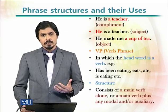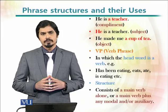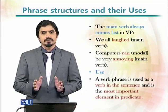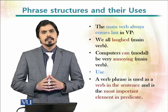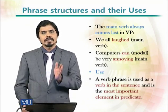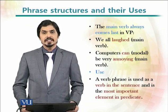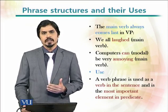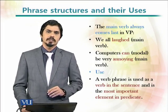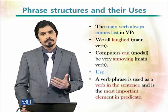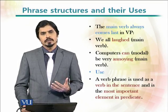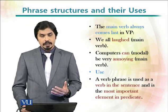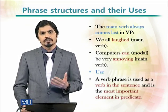A verb phrase consists of a main verb, and sometimes some auxiliary or modal verbs as well. The main verb always comes last in a verb phrase. For example, 'we all laughed' — 'laughed' is the main verb and it comes at the end. In 'the computers can be very annoying,' 'can' is a modal verb coming in the middle, before the main verb 'annoying.' Common uses of verb phrases are that they are used as a verb in a sentence or as an important part of the predicate.